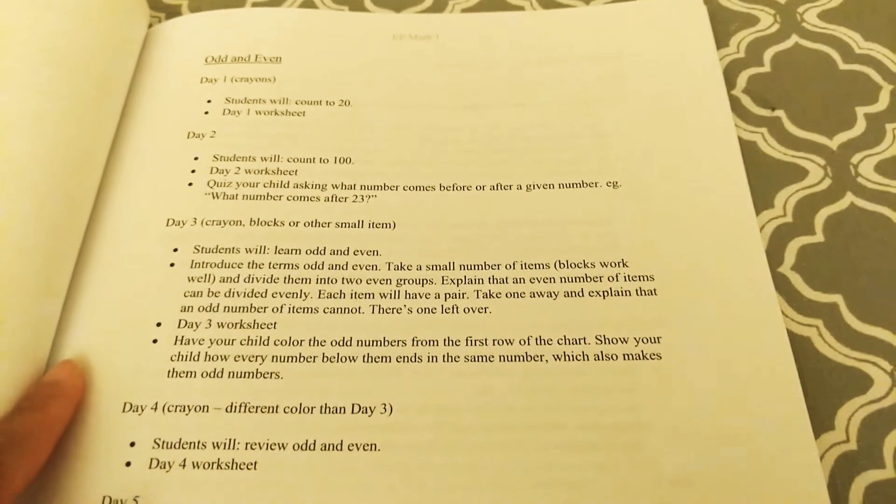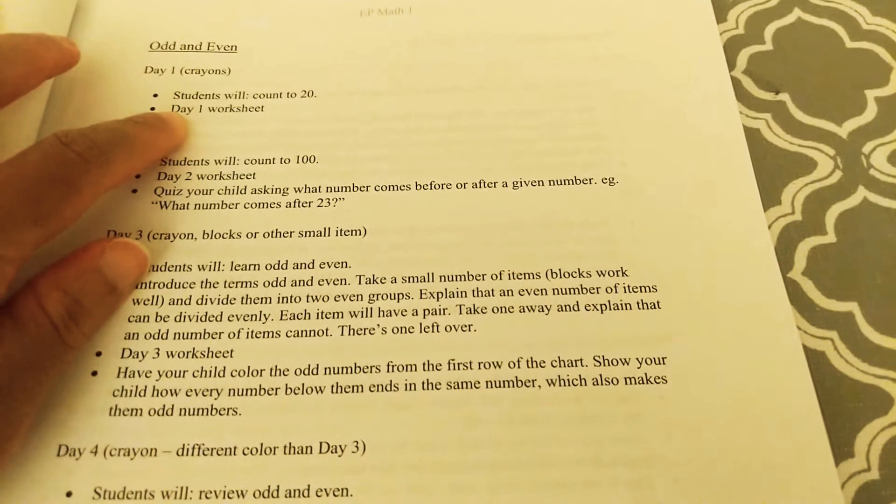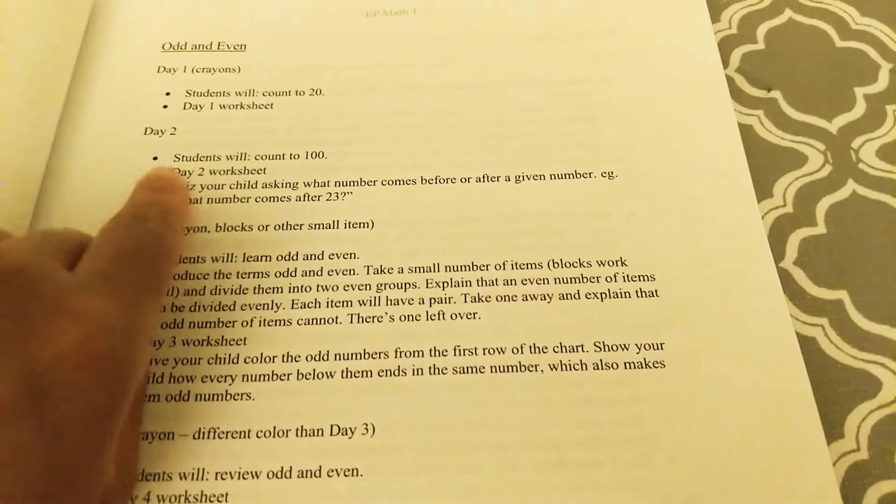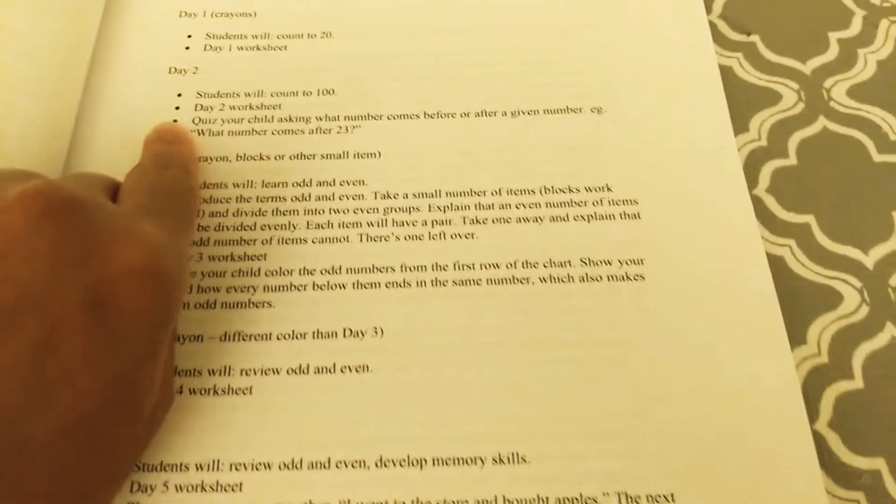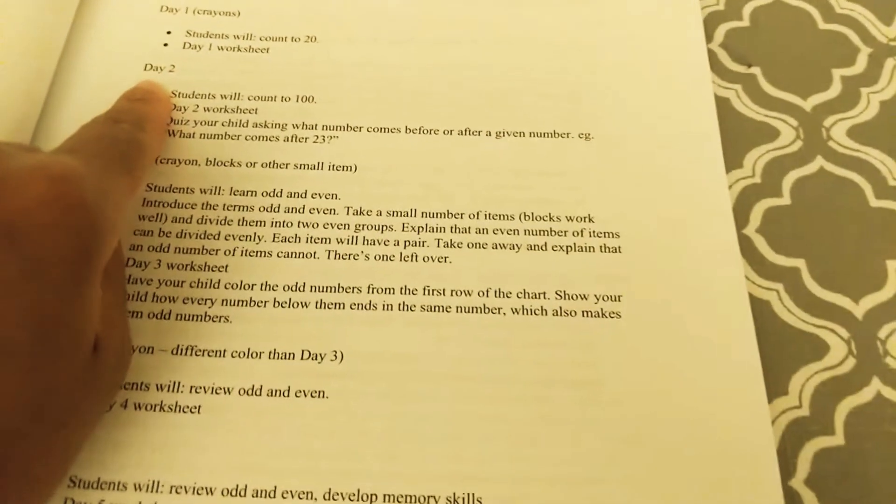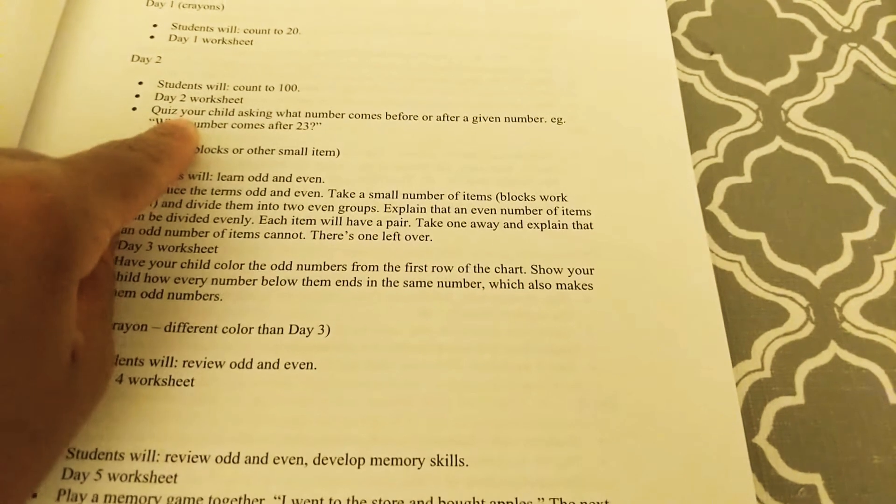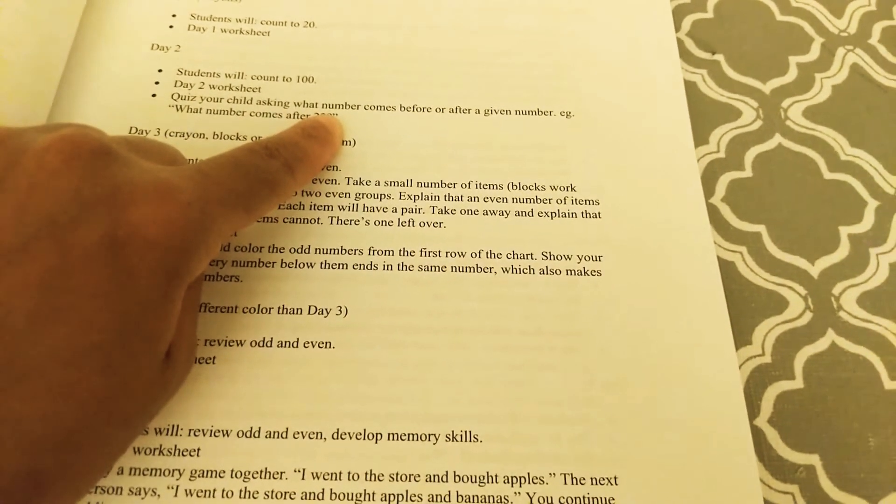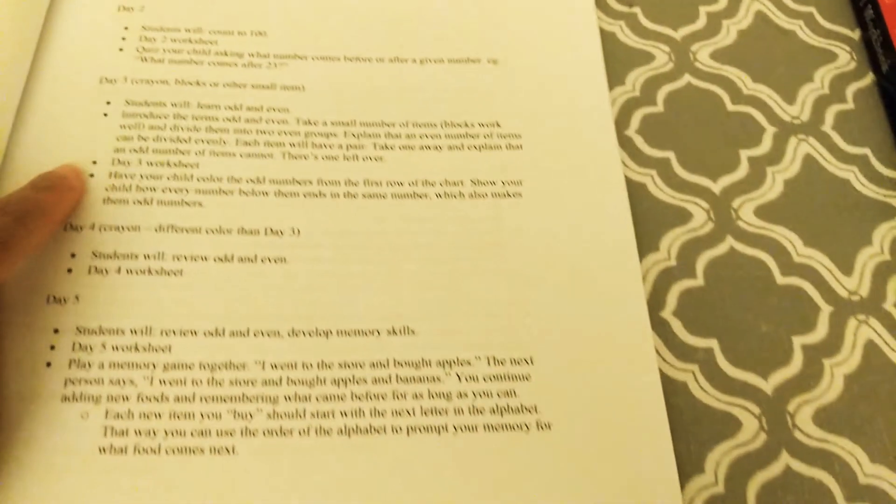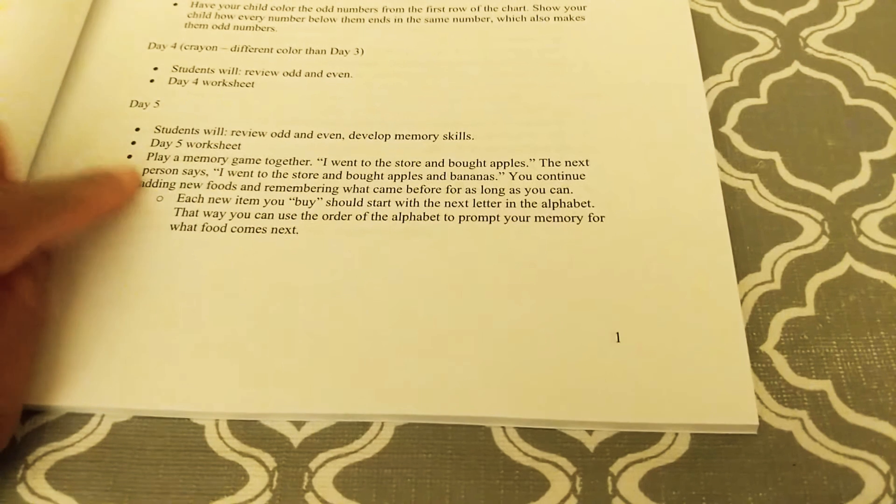So it starts with odds and evens. It tells you on day one you'll need crayons and it gives you the objective: students will count to twenty. So day one you'll do the worksheet. Day two students will count to one hundred, do the worksheet and so on. Day three will tell you what you need if you need anything. So day two you didn't need anything. Day three we'll need crayons, blocks, or other small items. Day four, crayons. Day five students will review odds and evens.